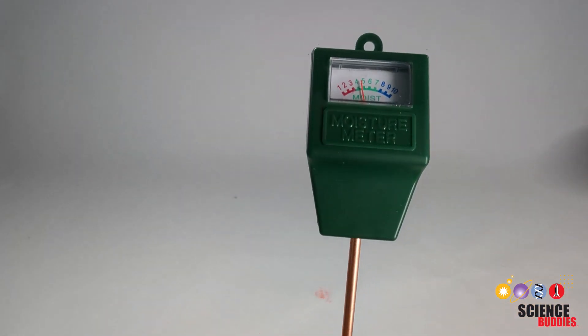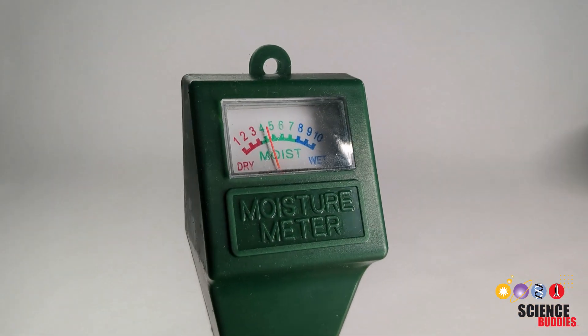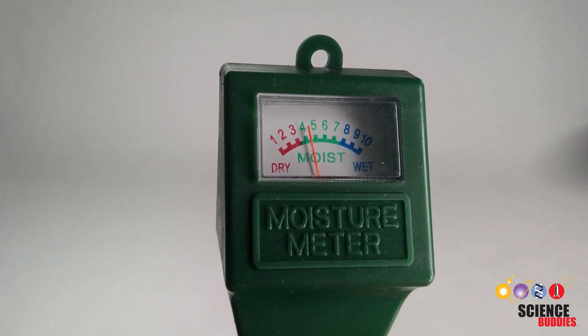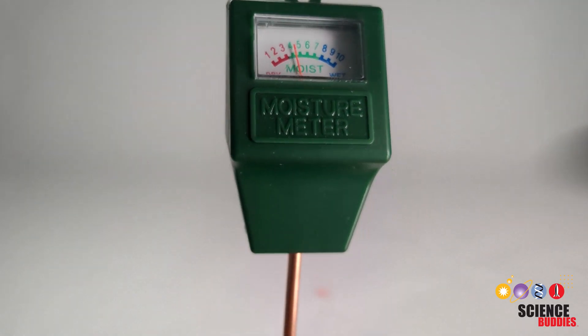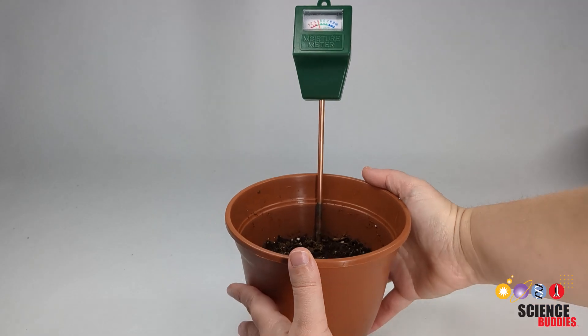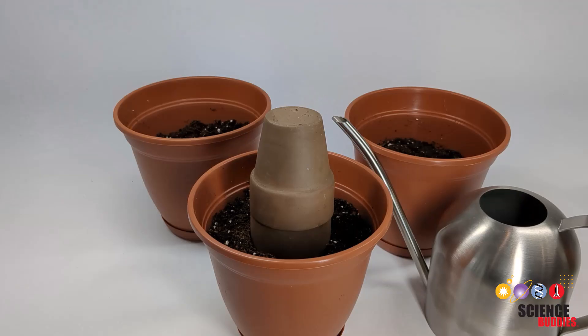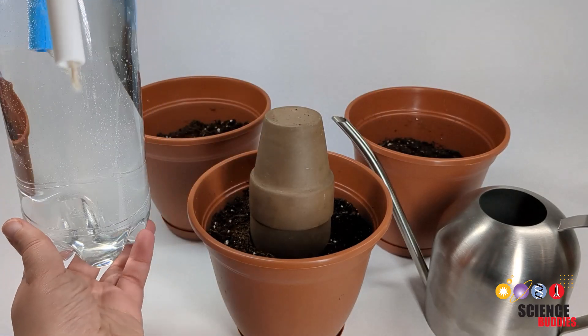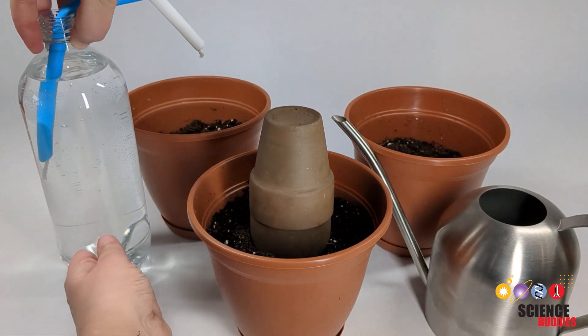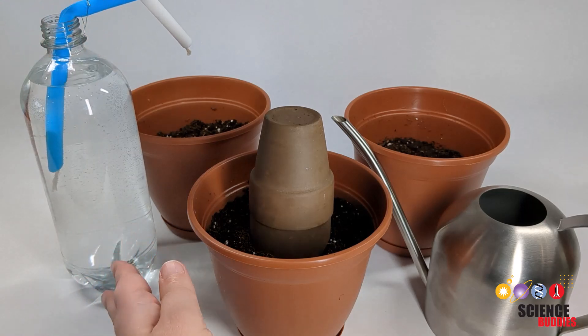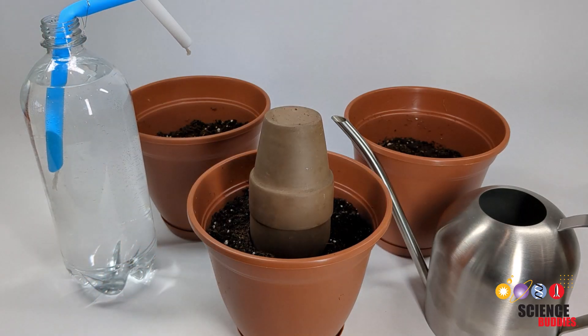You can use this data to learn about what irrigation system helps keep a more consistent soil moisture and if this impacts plant growth. During the experiment, you can also measure the plant height, germination time, and root length once the plants grow and use this information to test if passive irrigation systems are just as effective as active irrigation watering methods.